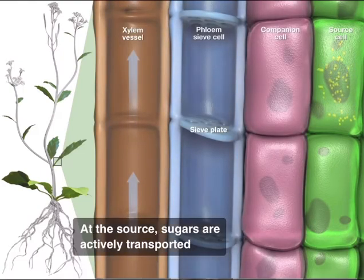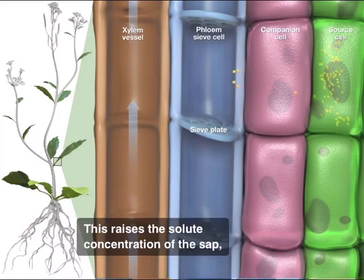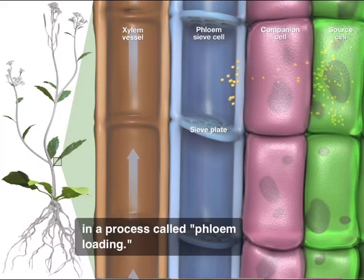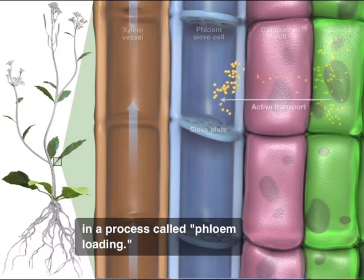At the source, sugars are actively transported into the phloem sieve tubes. This raises the solute concentration of the sap in a process called phloem loading.